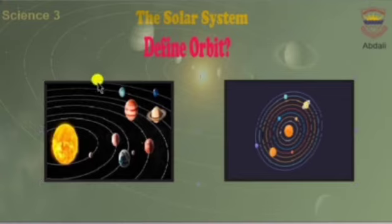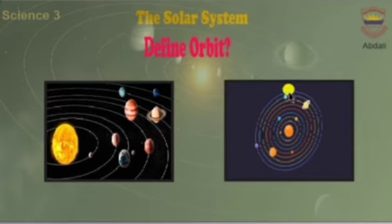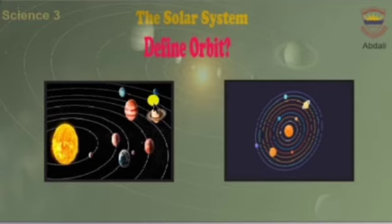Define orbit: planets travel around the sun along their paths, and these paths are known as orbits. As you can see in this picture, every planet has its own orbit and they move around the sun.